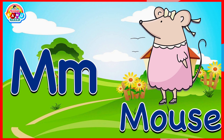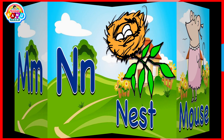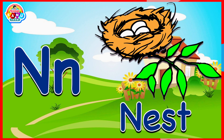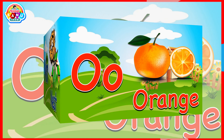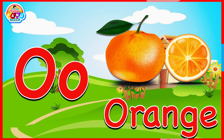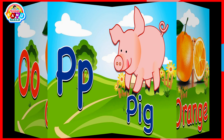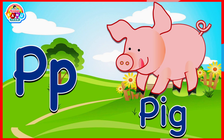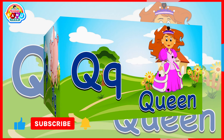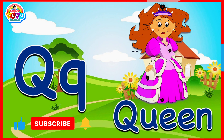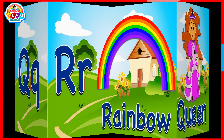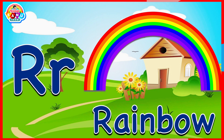M for mouse, N for nest, O for orange, P for pink, Q for queen, R for rainbow.